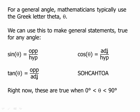Right now, these are true when we're talking about angles inside triangles. So that means theta would have to be greater than 0 degrees and less than 90 degrees. It would have to have a possible acute value inside a triangle. Right now, that's where we're going to focus.